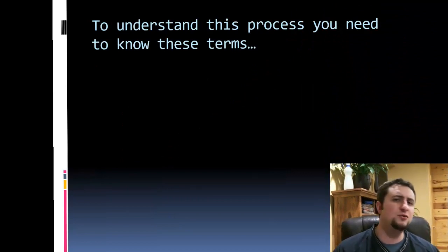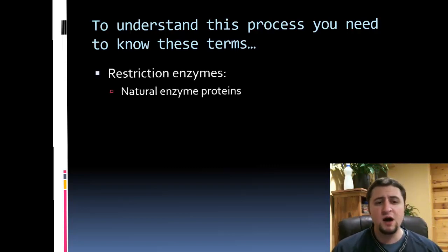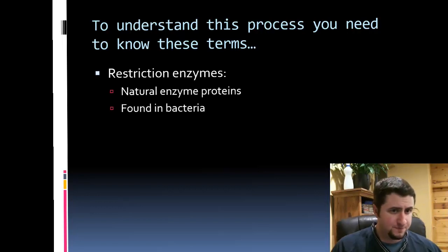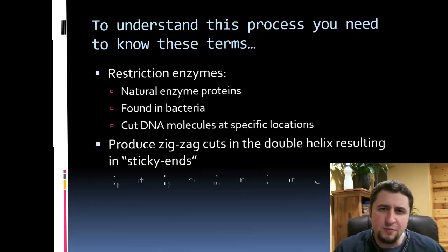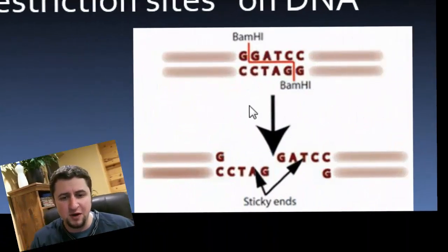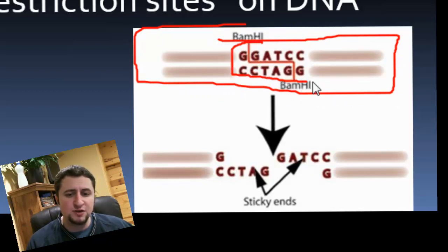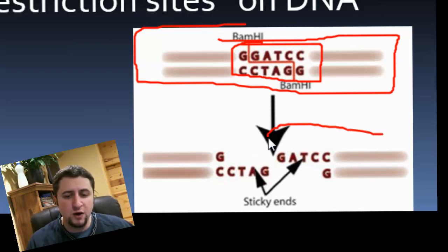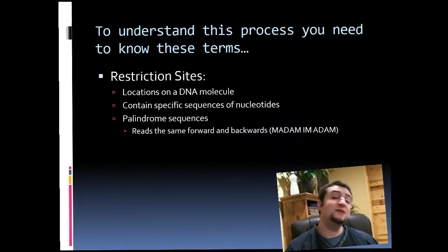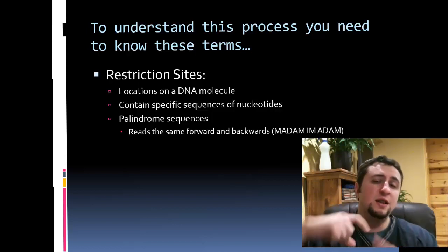To understand the process of gene cloning, you need to understand a few terms. The first is restriction enzymes. Restriction enzymes are natural enzyme proteins found in bacteria, and they cut DNA molecules in specific locations, producing a zigzag shape. If this right here is a segment of DNA, the restriction site is the specific location where restriction enzymes come in and cut open that site, producing two segments of DNA. A restriction site is a section on DNA that allows restriction enzymes to chop the DNA in half.